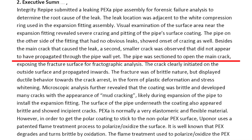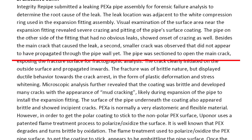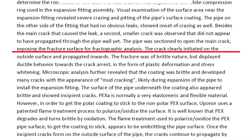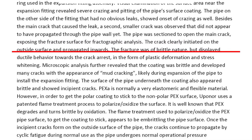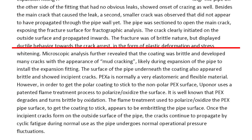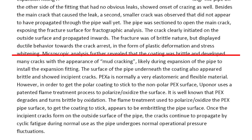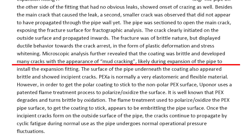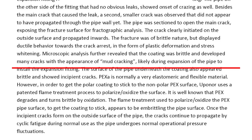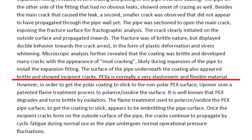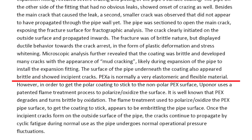Besides the main crack that caused the leak, a second smaller crack was observed that had not yet propagated through the pipe wall. The pipe was sectioned to open the main crack, exposing the fracture surface for fractographic analysis. The crack clearly initiated on the outside surface and propagated inward. The fracture was of brittle nature but displayed ductile behavior toward crack arrest in the form of plastic deformation and stress whitening. Microscopic analysis further revealed that the coating was brittle and developed many cracks with the appearance of mud cracking, likely during expansion of the pipe to install the expansion fitting.